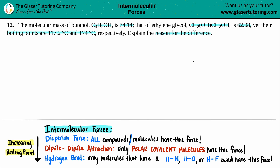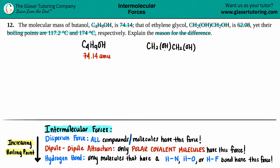All right. So let's just list some things out here. We're talking about butanol, which they gave us the compound C4H9OH. And they gave us ethylene glycol, which is CH2OHCH2OH. They do give us the molecular masses: C4H9OH is 74.14 AMU, and ethylene glycol is 62.08 AMU.